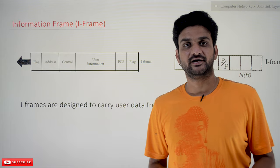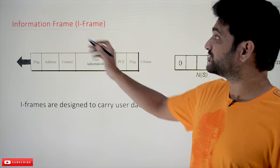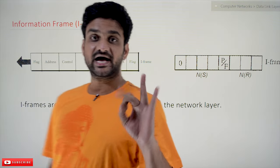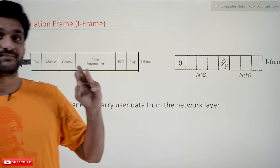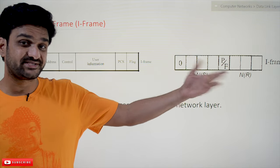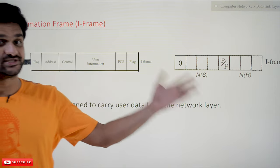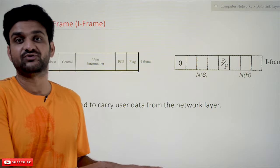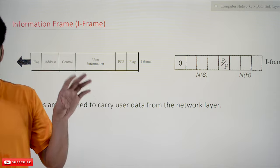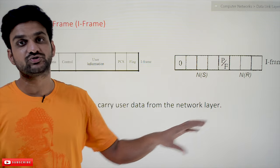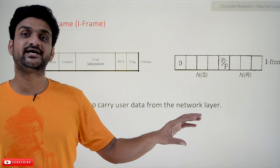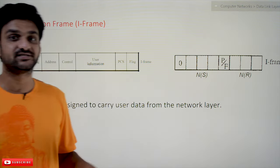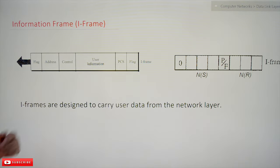Hi, welcome to Learning Monkey. I am Vikram. In this class we'll try to understand the information frame, or I-frame. There are three types of frames: I-frame, S-frame, and U-frame. The basic concepts related to framing methods used in HDLC have already been discussed in our previous video. Please watch that video first. Our suggestion is to follow the entire course playlist, the link for which is provided in the description below.